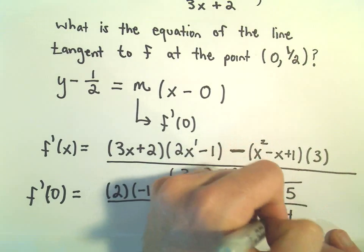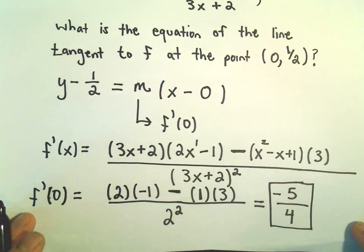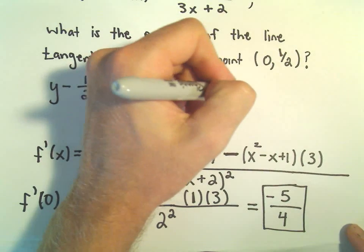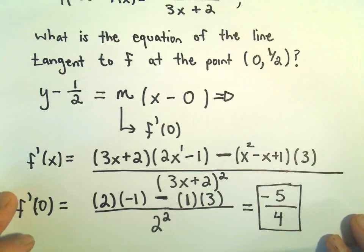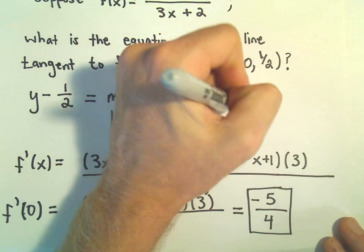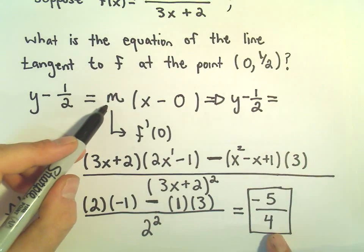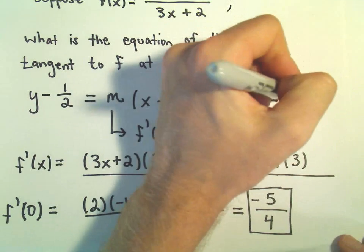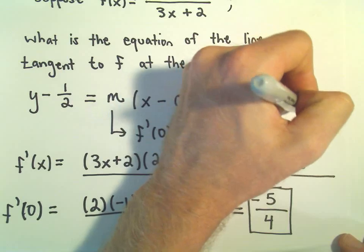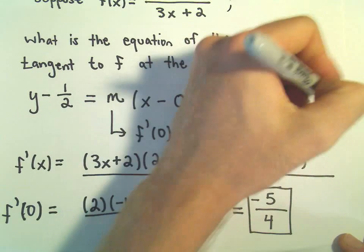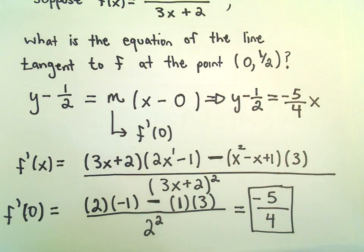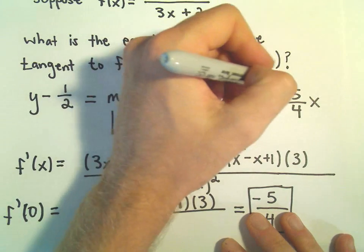So now we've got our slope of our tangent line. So the equation of the line, we can just write that as y - 1/2 equals—okay, we now know the slope by using the derivative. So we've got -5/4. And x - 0, we can just write that as x.